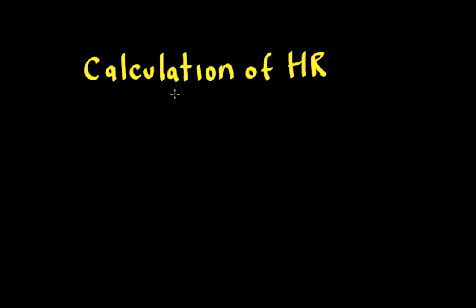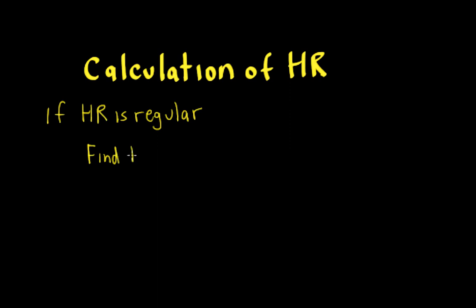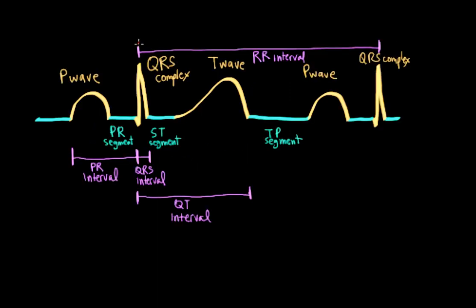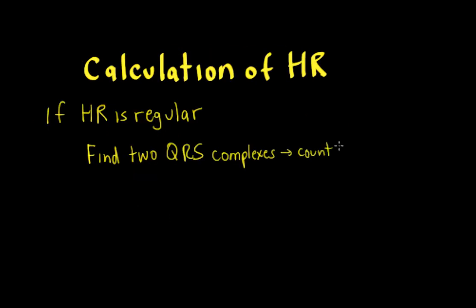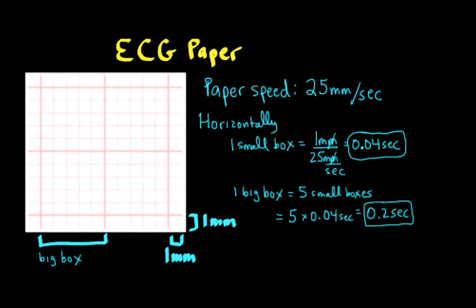After watching this video, you should be able to figure out how to calculate or estimate the heart rate given the ECG, and we're going to consider if the heart rate is regular. So what you want to do is find two QRS complexes. Here's a review of the interval in between the two QRS complexes — that's called the RR interval — and what we want to do is count the number of big boxes in the RR interval.